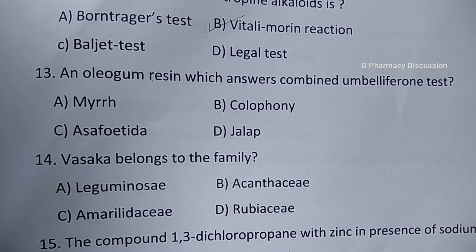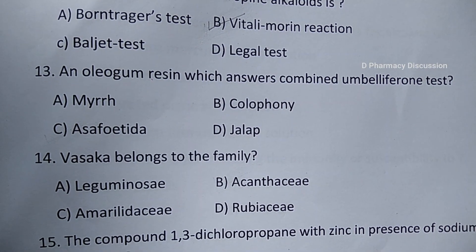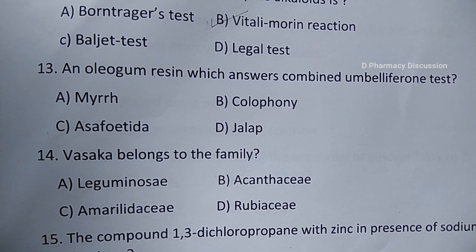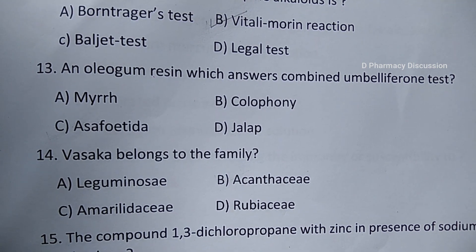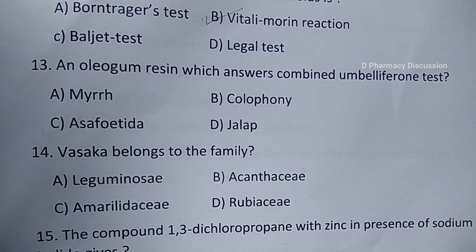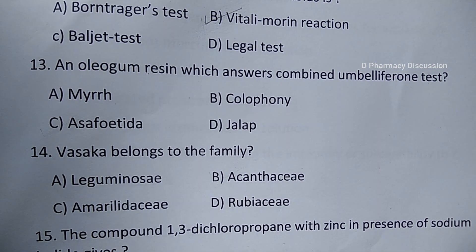Baljet, Legal, and also Keller-Kiliani are the identification tests for digitalis. Question number 13: an oleogum resin which gives a positive umbelliferone test. Options are A. Myrrh, B. Colophony, C. Asafoetida, and option D. Jalap. Correct answer is option C, that is Asafoetida.